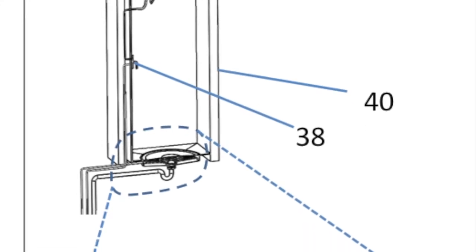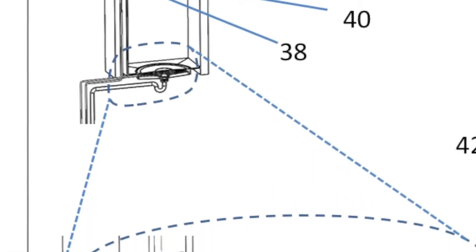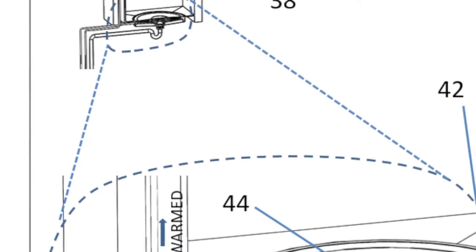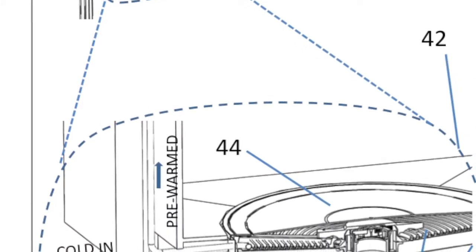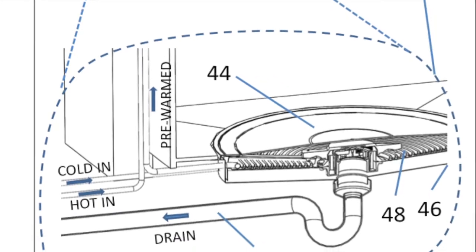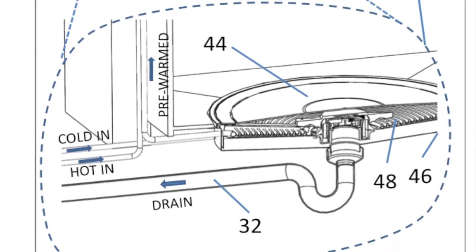This figure shows the overall system. The heat exchanger fits in the same location as the drain. With the exception of the cold water making a detour to the heat exchanger, there is no change in plumbing.